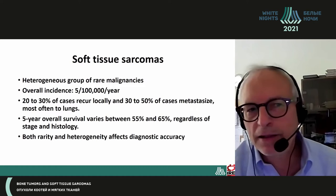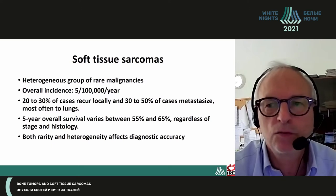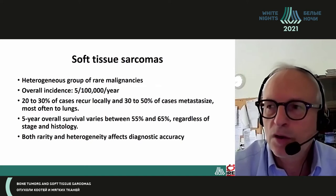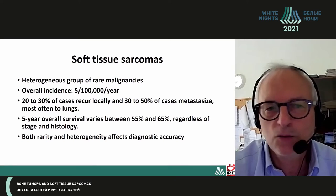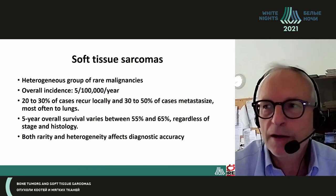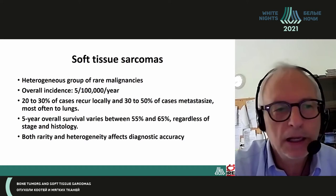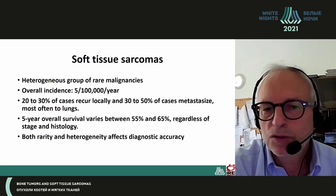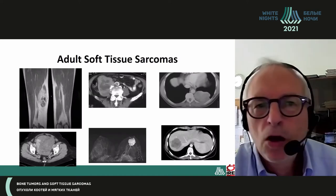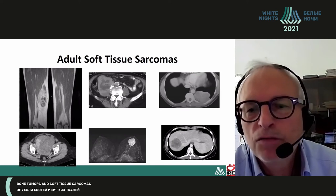Soft tissue sarcomas are a heterogeneous group of rare malignancies. The overall incidence is about 5 per 100,000 a year. 20-30% of cases recur locally, and 30-50% of cases give rise to metastasis, most often to the lungs. The five-year overall survival varies between 55 and 65%, regardless of histotype and stage. Both rarity and heterogeneity affect diagnostic accuracy, and of course they can occur in every part of the body.